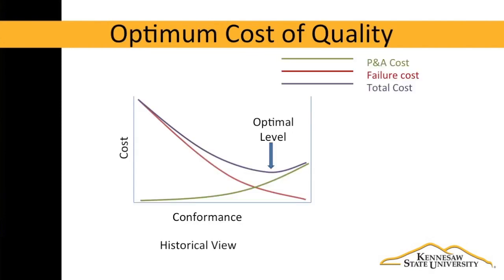So how good is good enough? Doesn't better quality cost too much at some point? A traditional view suggests that the optimum level of quality is less than 100%. This graph shows various costs on the y-axis and the level of conformance on the x-axis. As prevention and appraisal costs rise, shown with the orange line, failure costs decline, shown with the red line. At some point, after these lines intersect, the total costs, shown in blue, will begin to rise. The idea is that there's an optimal level of quality, and when we reach that, spending more just increases costs.